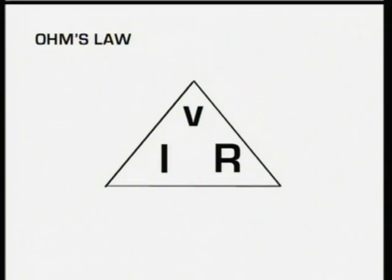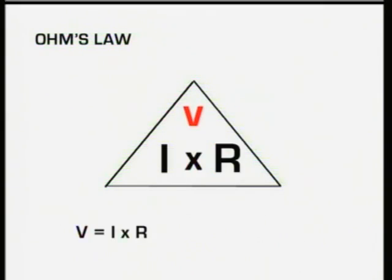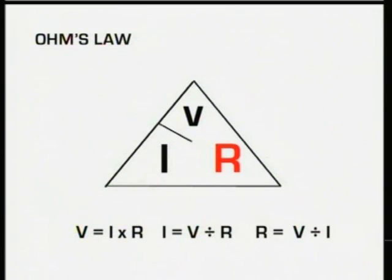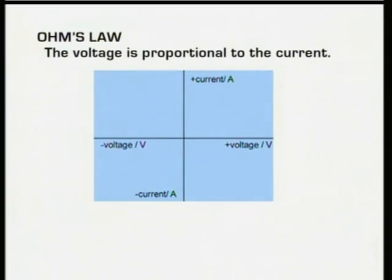A good way to remember Ohm's law is to put the values in a triangle, with V at the top in the vertex, I on the left and R on the right. So V equals I times R; I equals V divided by R; and R equals V divided by I. Another way of stating Ohm's law is to say that the voltage is proportional to the current, as long as the resistance and the temperature stay the same.